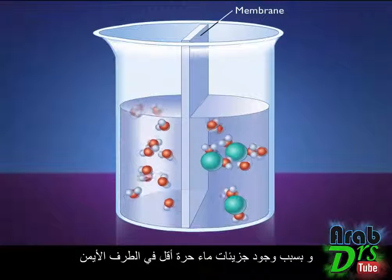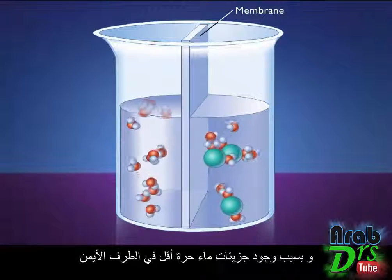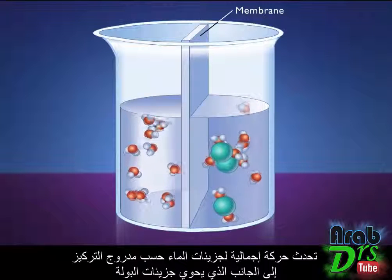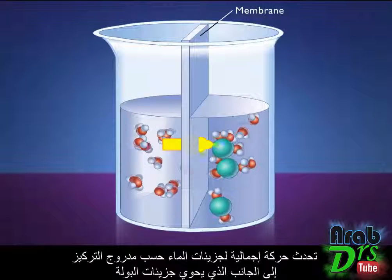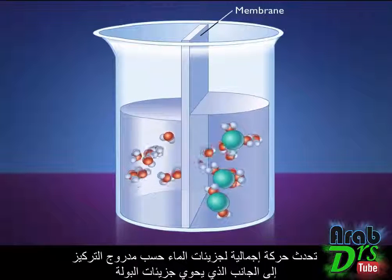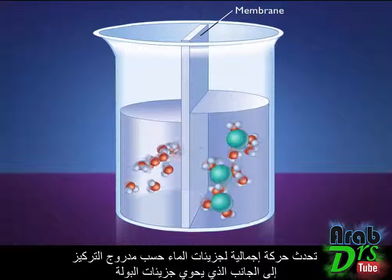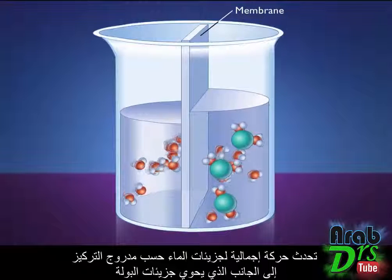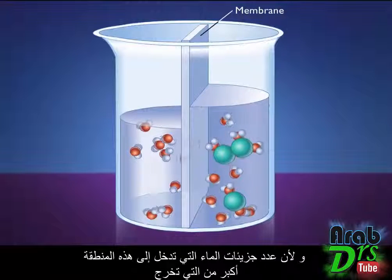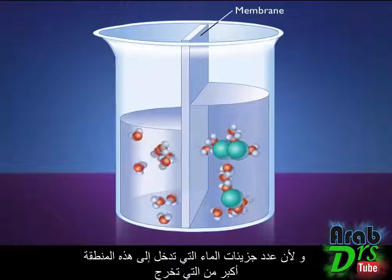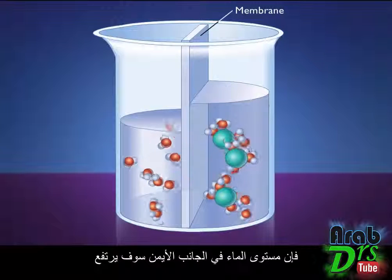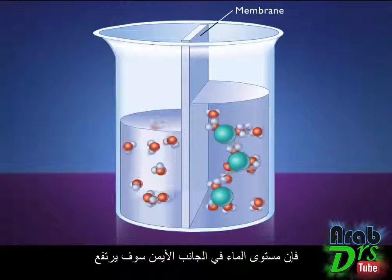With fewer free water molecules on the right-hand side, there is now a net movement of water molecules down their concentration gradient to the side with the urea molecules. Because more water molecules are moving into this area than are leaving, the water level on the right side will rise.